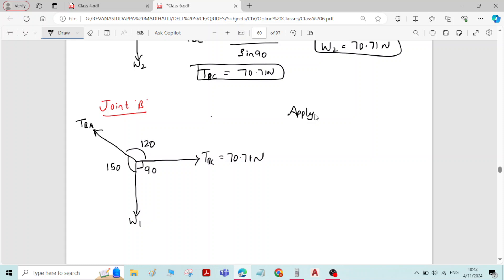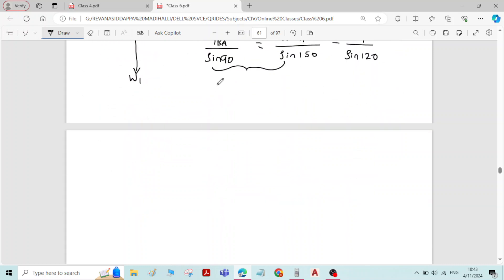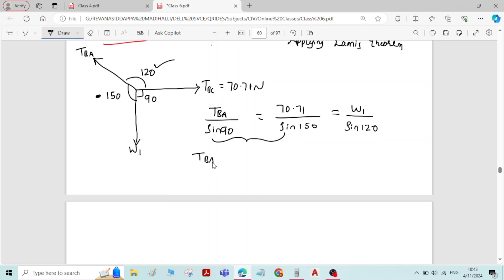Now applying Lami's theorem. TBA divided by sine 90 is equal to 70.71 divided by sine 150 is equal to W1 divided by sine 120. Now consider first and second equation, you will get TBA. Therefore, TBA is equal to 70.71 sine 90 divided by sine 150.